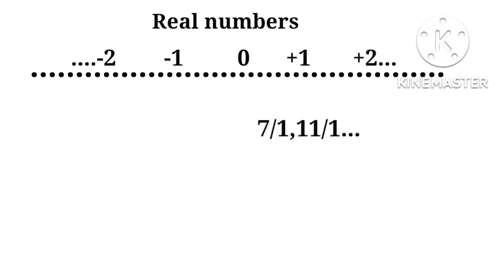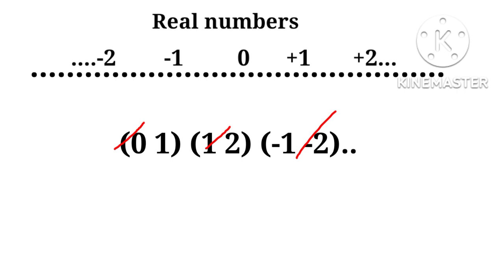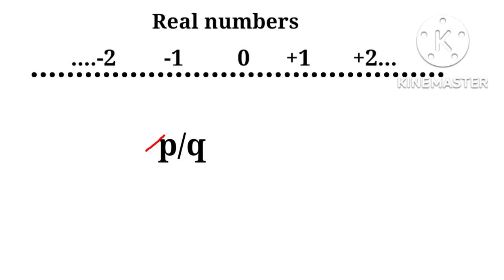Therefore, all natural, whole, integers can be said to be rationals. Now we see that in between intervals like 0-1, 1-2, -1 to -2, not all are rationals, but some of them can't be expressed as p upon q or rationals.